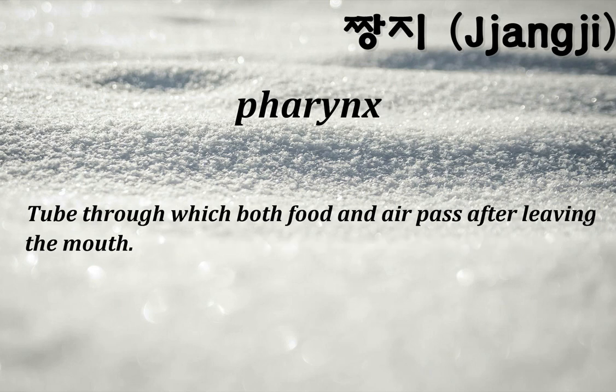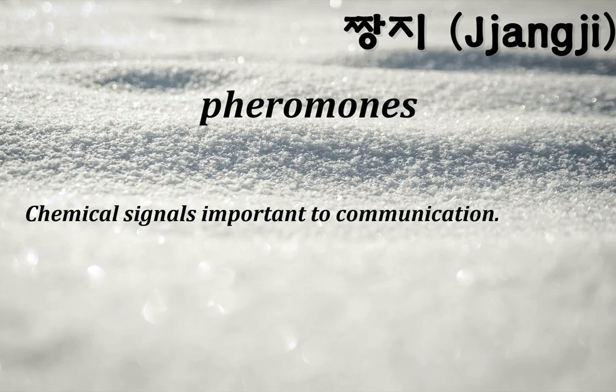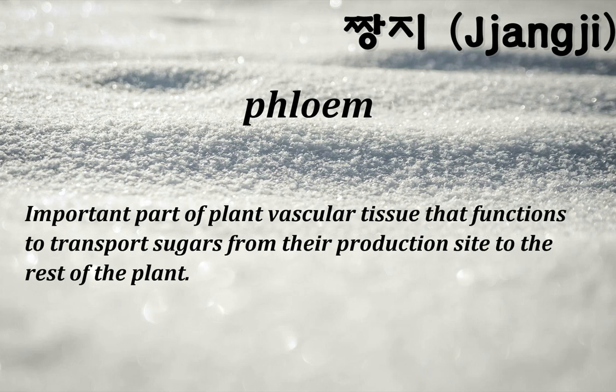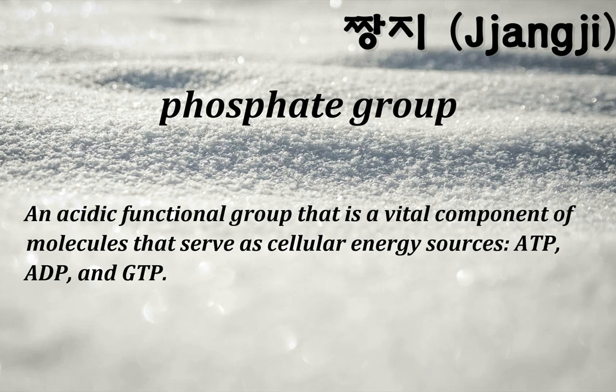Pharynx: tube through which both food and air pass after leaving the mouth. Pheromones: chemical signals important to communication. Phloem: important part of plant vascular tissue that functions to transport sugars from their production site to the rest of the plant. Phosphate group: an acidic functional group that is a vital component of molecules serving as cellular energy sources — ATP, ADP, and GTP.